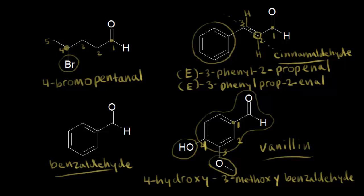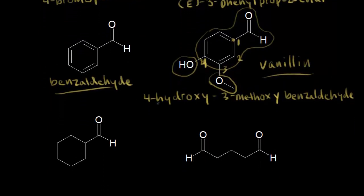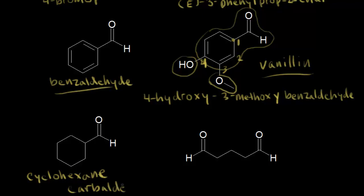Let's look at two more aldehydes. Looking at the one on the left, it's not benzaldehyde — we don't have a benzene ring here anymore, we have a cyclohexane. This one is going to be called cyclohexanecarbaldehyde. So cyclohexanecarbaldehyde is the IUPAC name for this.